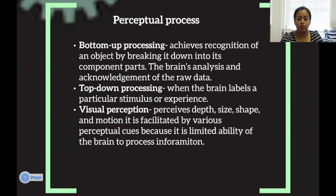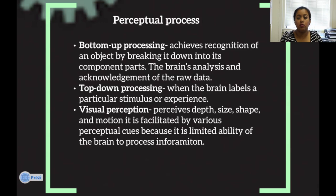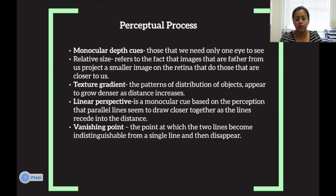Perceptual processing: bottom-up processing activates recognition of objects by breaking them down into component parts — it is the brain's analysis of raw data. Top-down processing is when the brain labels a particular stimulus or experience based on prior knowledge. Visual perception involves processing depth, size, shape, motion, and other qualities through various perceptual cues, given the brain's limitations in processing information.